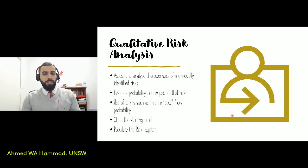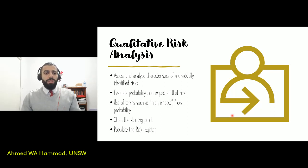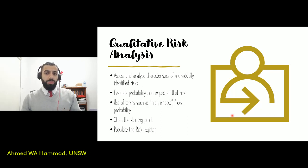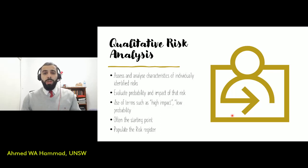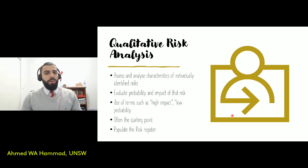Examples of project objectives would be time or cost. In a quantitative risk analysis approach, we are looking at the impact of the risk and evaluating the probability of the risk through the use of descriptive words. We use terms such as high impact or low impact. When we look at probability, it's high probability, medium probability, or low probability.